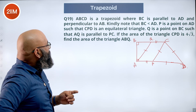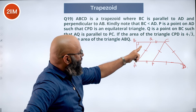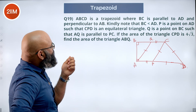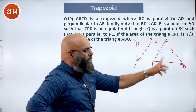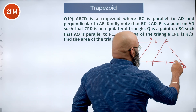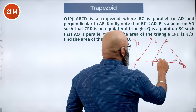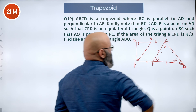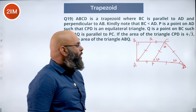The area of triangle CPD is given, and we need to find the area of triangle ABQ. Since CPD is an equilateral triangle, all its angles are 60 degrees: angle D is 60°, angle P is 60°, and angle C in the equilateral triangle is also 60°.